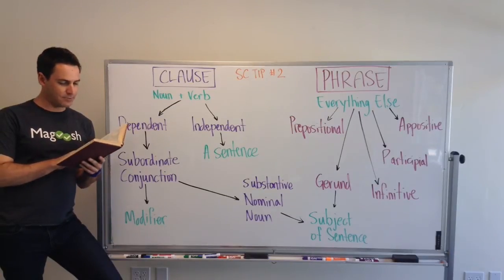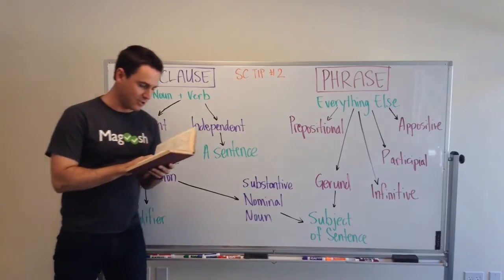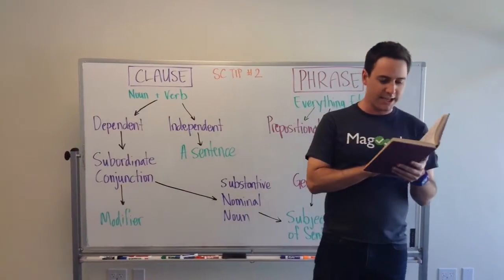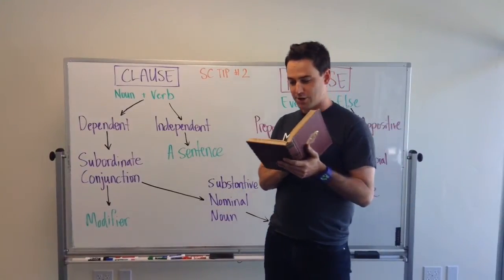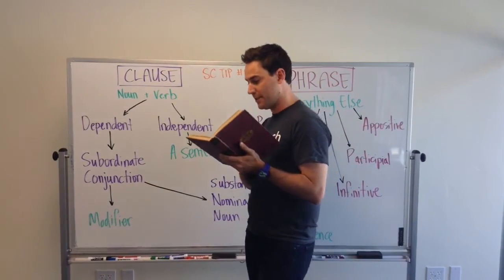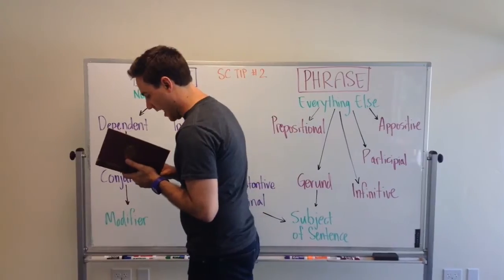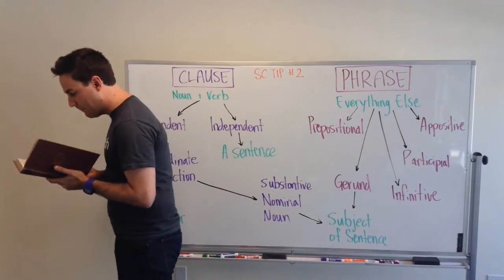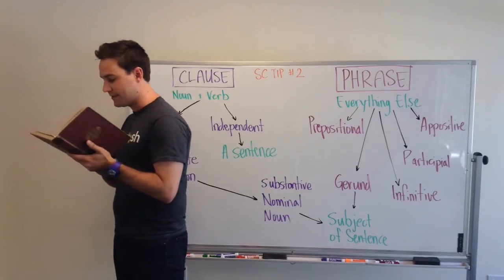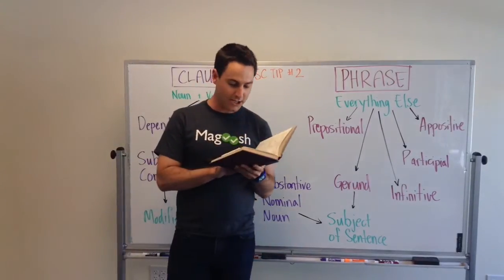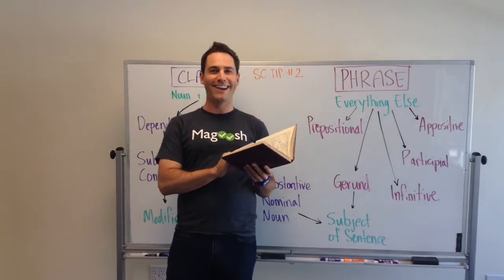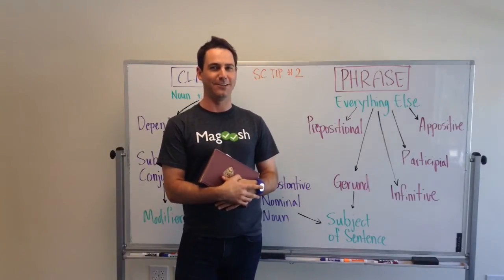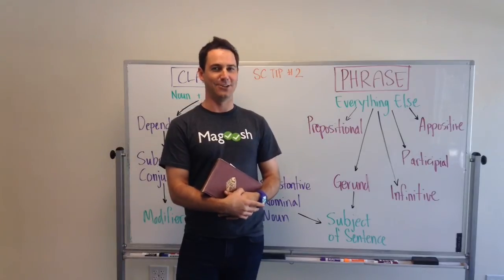To be or not to be? That is the question. Whether 'tis nobler in the mind to suffer the slings and arrows of outrageous fortune, or to take arms against a sea of troubles, and by opposing end them — to die, to sleep no more, and by a sleep to say we end the heartache? Oh, hi! Welcome to GMAT Tuesdays. You just caught me reading a little Shakespeare out loud, which I like to do.